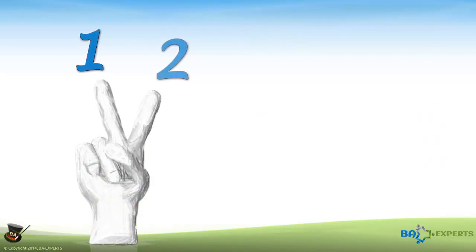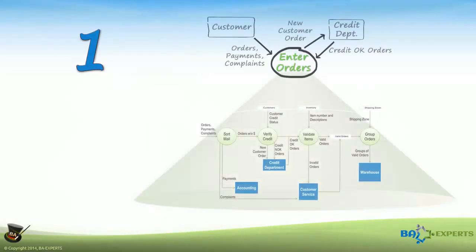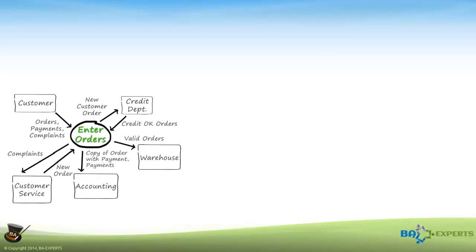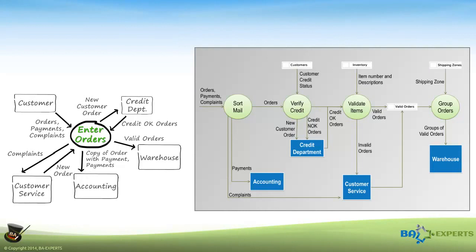There are actually two steps to balancing the individual levels of DFDs. The first step is very simple in that you're comparing flows entering and leaving the detail level diagram with the higher level diagram. To do that, I need to be able to view the diagram containing the process I exploded and the lower level diagram at the same time.